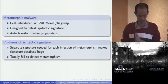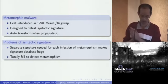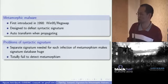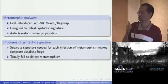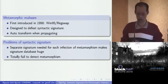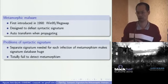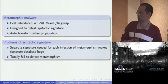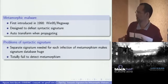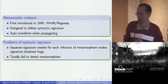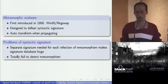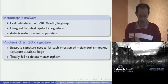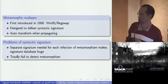Metamorphic malware introduces many problems for syntactic signatures. Each infection by metamorphic malware needs a separate signature. Because in theory, metamorphic malware can generate an infinite number of infections, we would need an infinite number of signatures. That makes the signature database very huge. And second, metamorphic malware can totally bypass syntactic signatures.